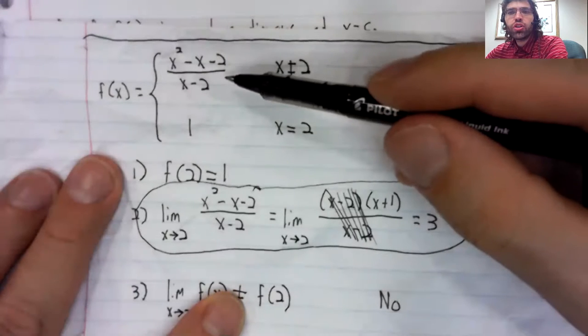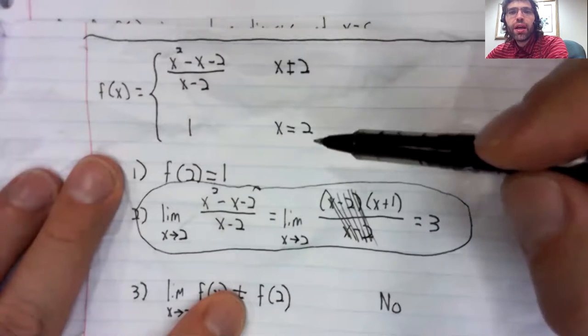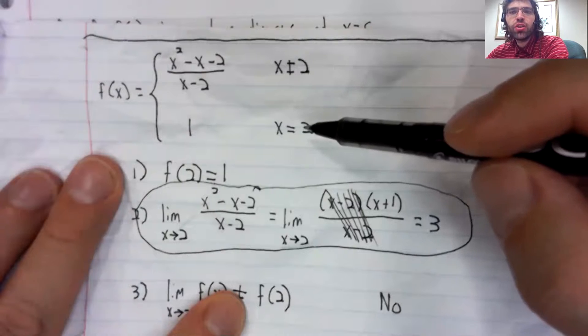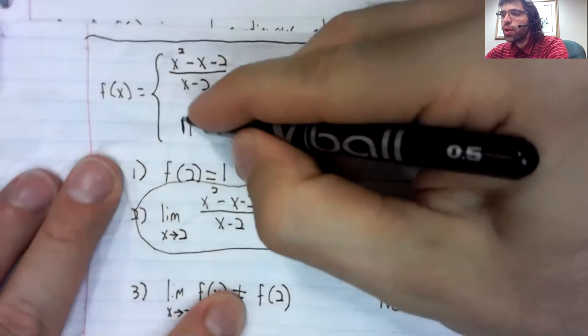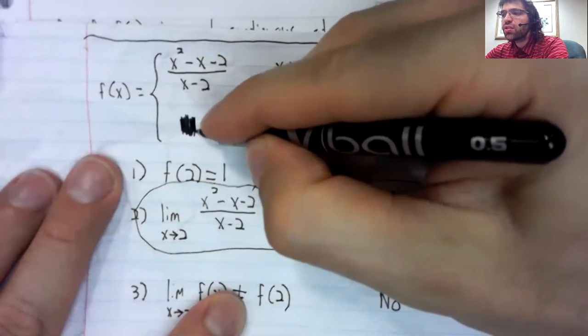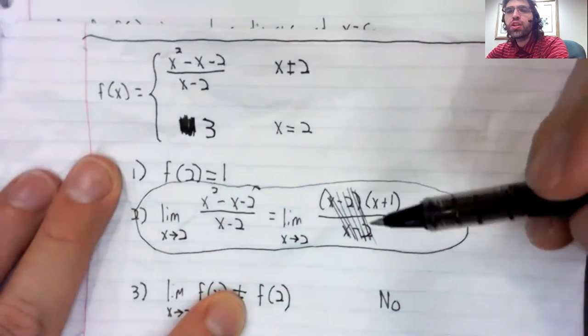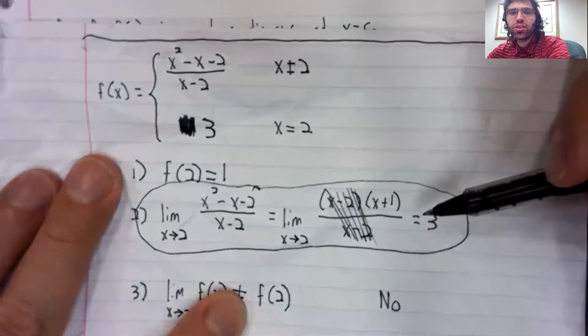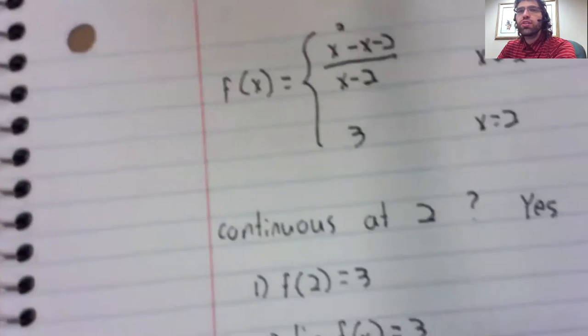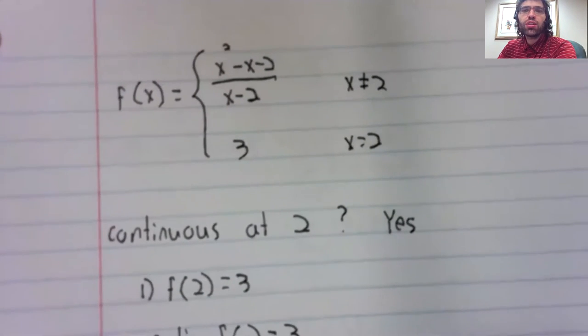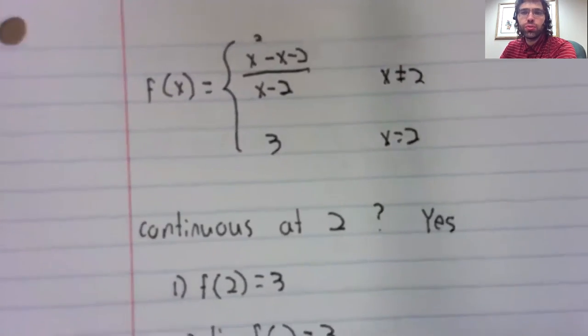So we took this function and left it alone, except at the point of discontinuity, two. We redefined this function to equal this limit, and the resulting function we got was continuous at two.